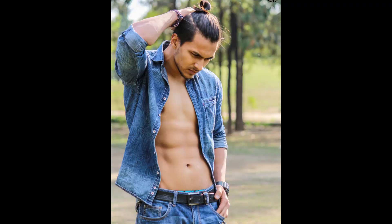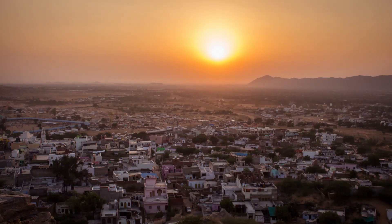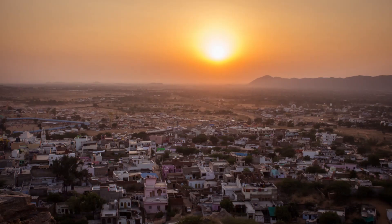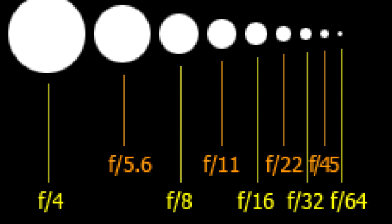If you want to shoot in shallow depth of field — where you focus on the subject and your background is completely blurred — you will choose a smaller aperture number, for example F1.4 or F2, which gives you a wide aperture opening. And if you want to shoot in deep depth of field — where the whole frame is in focus — you will choose a higher aperture number, for example F16 or F32, which gives you a small aperture opening.